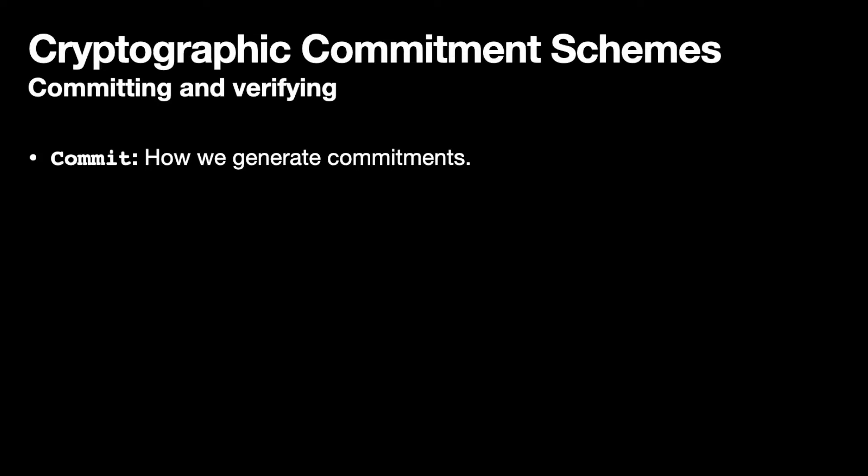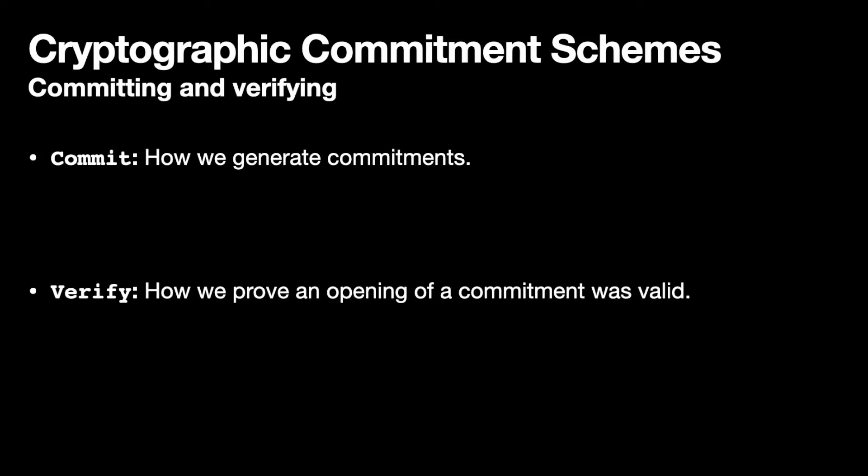In a cryptographic commitment scheme, we're going to have two algorithms. The commit algorithm, which is how we're going to create commitments. And we have our verify algorithm, which is how we're going to prove that an opening of a commitment was valid. So given the commitment and the value inside, we can check that this was the value that was committed to previously.